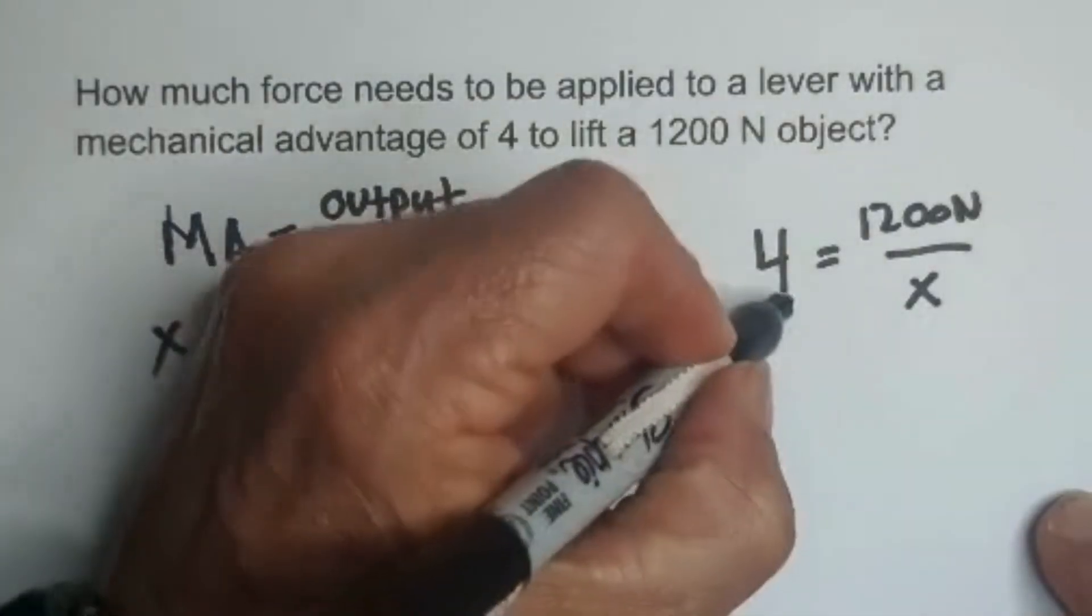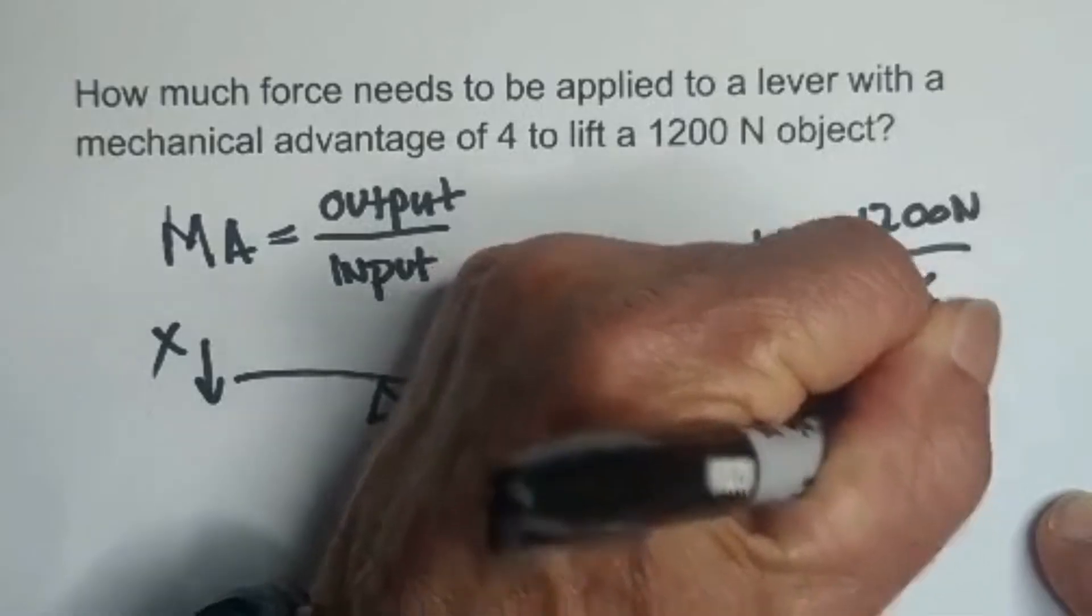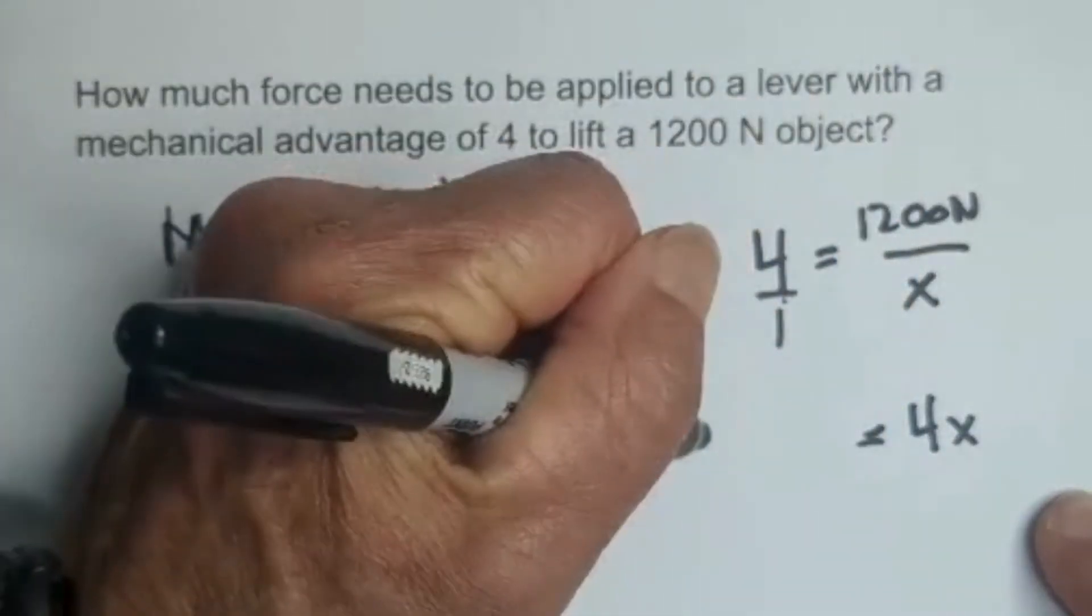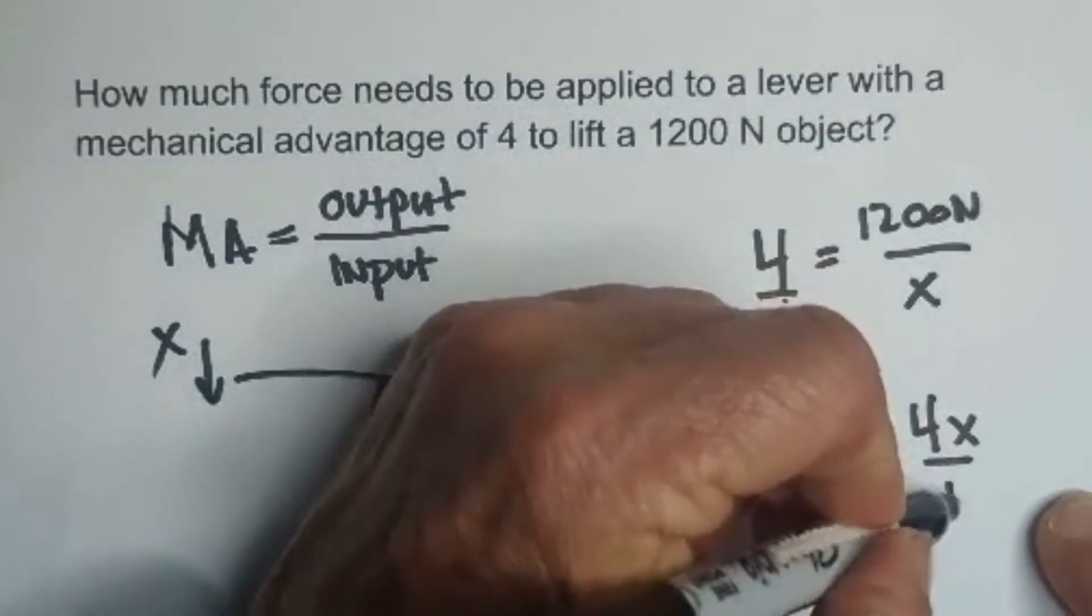We can place 4 over 1 and then cross multiply, so that gives us 4x equals 1200 newtons. We're going to divide through by 4.